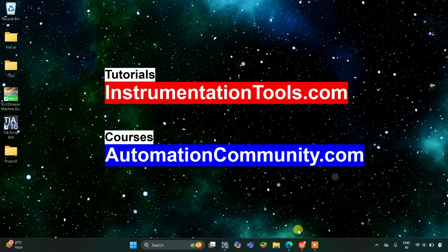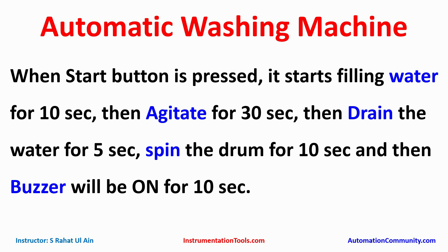Welcome to Automation Community. In this video we are going to discuss an example about an automatic washing machine. When the start button is pressed, it starts filling water for 10 seconds, then agitates for 30 seconds, then drains the water for 5 seconds, spins the drum for 10 seconds, and then the buzzer will be on for 10 seconds. For this example we will use normally open contacts and timers like pulse timer (TP) and on-delay timer (TON).